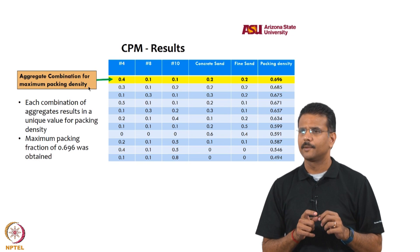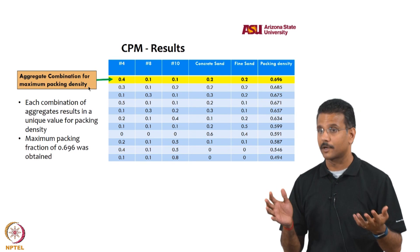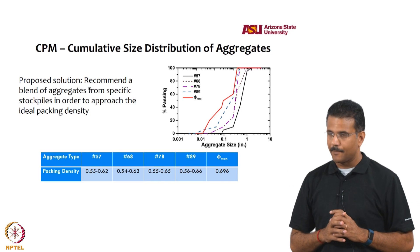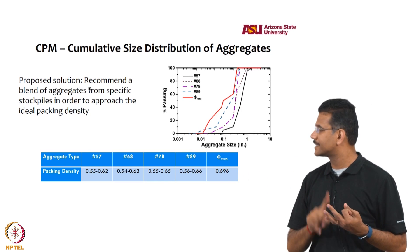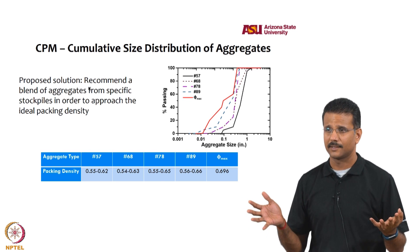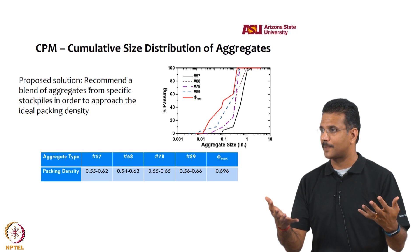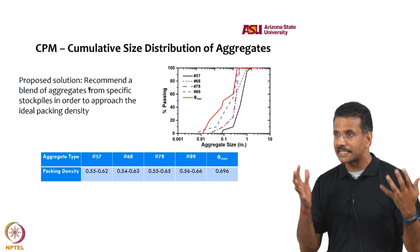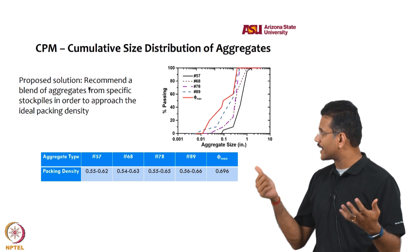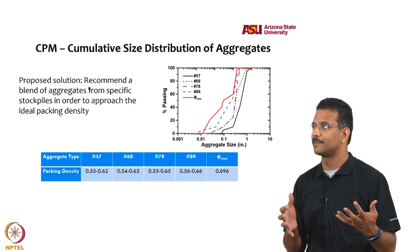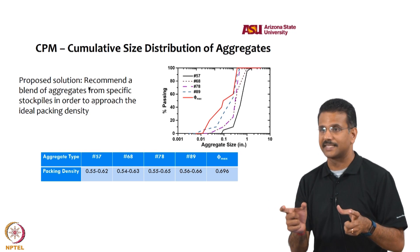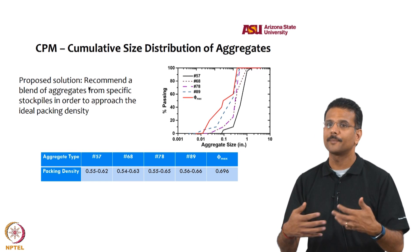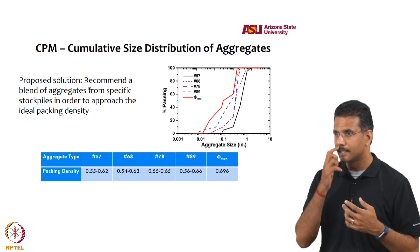In practice, communication with the ready-mix plant must use standard aggregate designations (No. 57, No. 68, No. 78, No. 89), since those are the gradations they stock. The approach tells the ready-mix operator what packing density range a given pile gives — for example, No. 57 gives roughly 0.55 to 0.62 — and advises what to augment to achieve the desired packing. This makes it a practical tool for communicating aggregate combinations to ready-mix facilities.